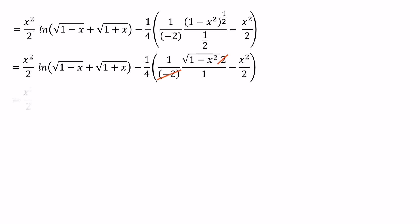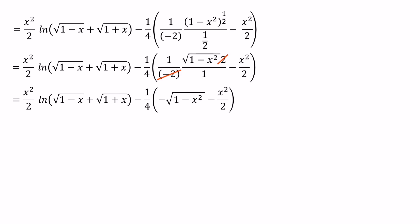After that, we can remove the brackets and get the final answer: (x²/2)·ln(√(1-x) + √(1+x)) plus (1/4)·√(1-x²) plus x²/8 plus a constant.